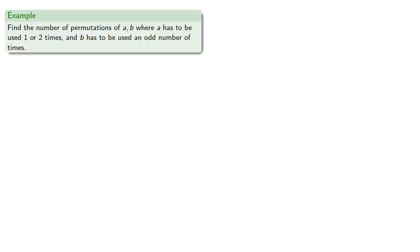In principle, that's all we need to do. In practice, there's a lot of steps, so let's take a look at a more involved example. Let's find the number of permutations of two elements a and b, where a has to be used one or two times, and b has to be used an odd number of times.